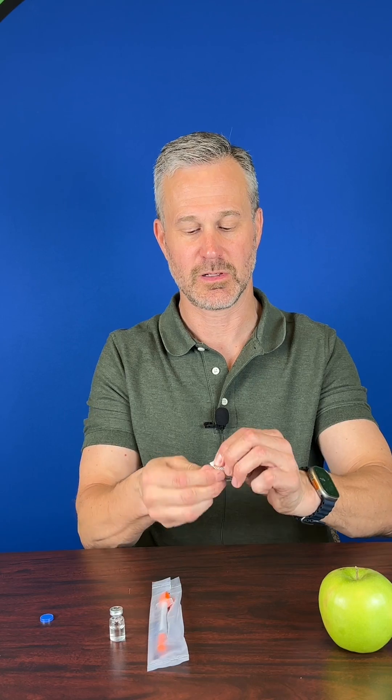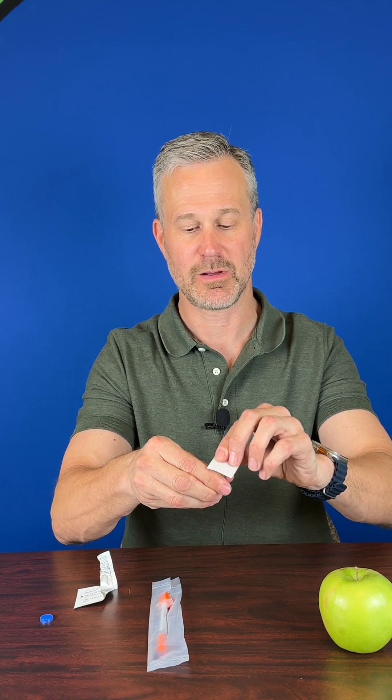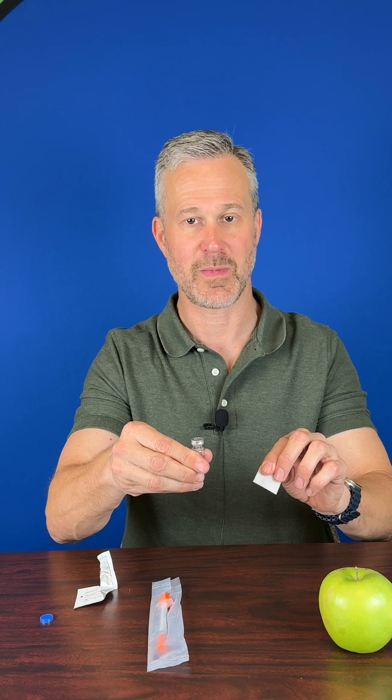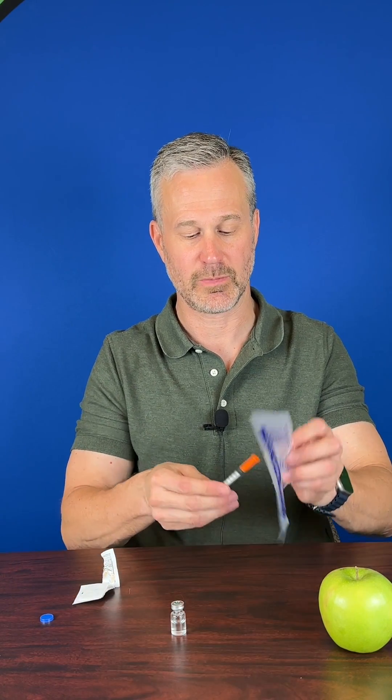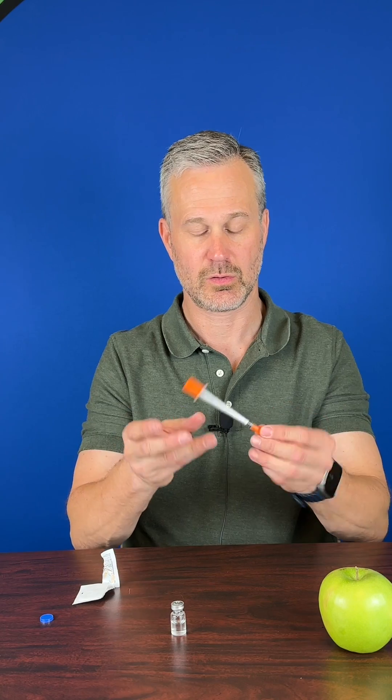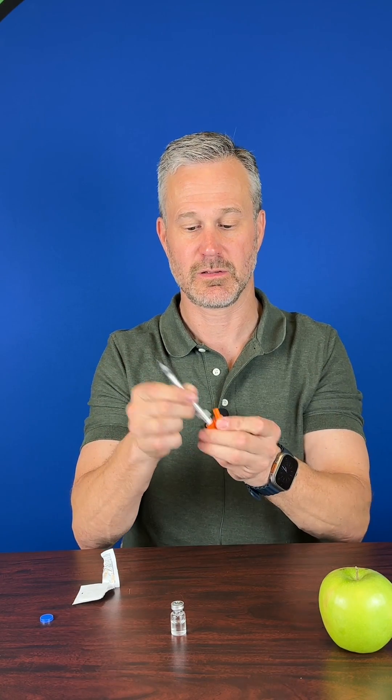Once you open up the vial, take your alcohol pad and wipe off the top rubber stopper of your medicine vial. Once you've done that, open up your syringe, taking off the protective safety caps, one on the front and one on the back.